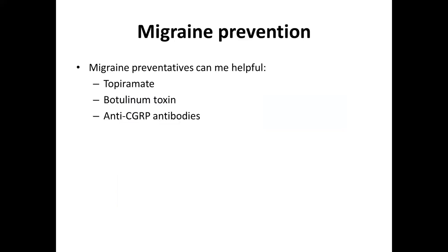Migraine prevention has certainly been shown to be helpful in patients with medication overuse headache. The vast majority of patients who get medication overuse headache have migraine or carry relevant genes from family members with migraine, so it's an important treatment target. Oral preventatives such as topiramate — which is also useful in treating IIH — can help with medication overuse headache. Botox and the new anti-CGRP monoclonal antibodies have also been shown to help patients with medication overuse headache.